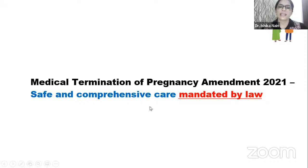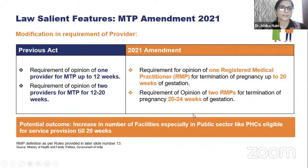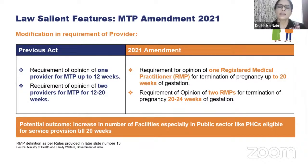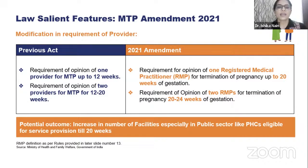The Medical Termination of Pregnancy Amendment 2021 consists of safe and comprehensive care mandated by law. The first modification is in the requirement of the provider. The previous act required opinion of one provider for MTP up to 12 weeks and two providers for 12 to 20 weeks. Now, opinion of one RMP is required up to 20 weeks of gestation, and two RMPs are required for 20 to 24 weeks. This was done to increase the number of facilities available to the public, especially PHCs.